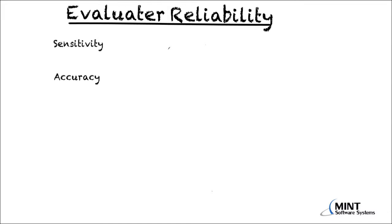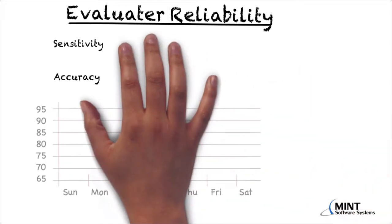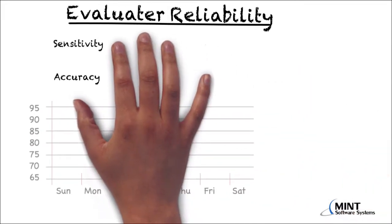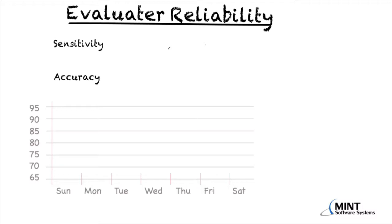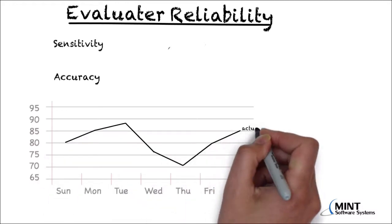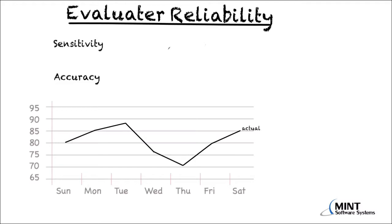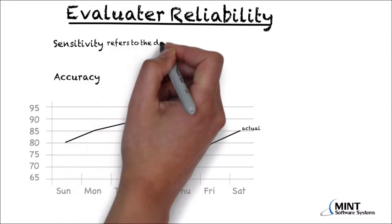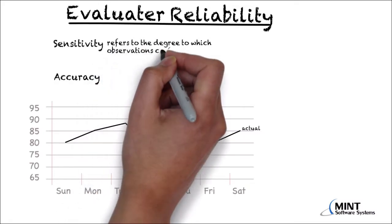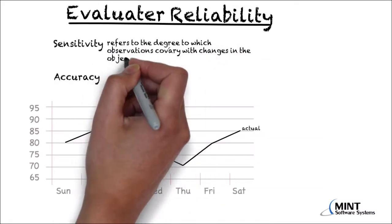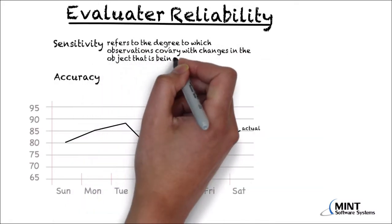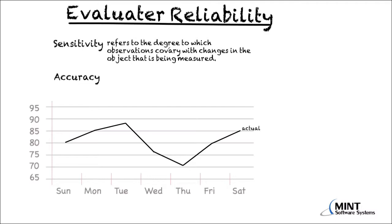Let's first talk about sensitivity. We have here the temperature curve of the airport of Atlanta from last week, so there is a measurement for every day. Sensitivity refers to the degree to which observations of an evaluator co-vary with changes in the object that is being measured, which is the actual true temperature.